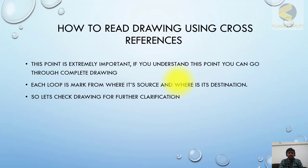Each loop is marked with its source — where it started — and its destination — where it terminates. Every loop in the drawing shows this source and destination, unless it is the very first or very last point.